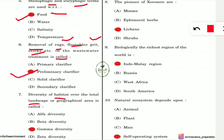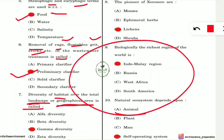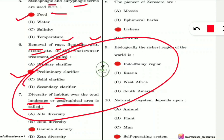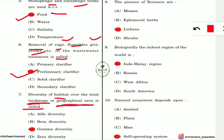Question 7: Diversity of habitat over the total landscape or geographical area is called what? Since it refers to a large total area, the answer is gamma diversity. Remember: gamma diversity covers the whole area, beta diversity is between habitats, and alpha diversity refers to diversity within a single habitat.